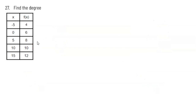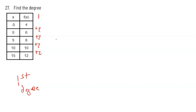Let's look at another example, but first we check for equal interval inputs: negative 5 to 0 is plus 5, 0 to 5 is plus 5, 5 to 10 is plus 5, and so on. Now our first set of differences is plus 2, then plus 2, plus 2, plus 2, plus 2 — it only took one time looking at the differences to see a constant. So this is a first degree polynomial, which makes sense because first degree polynomials are linear functions, and linear functions have a constant rate of change. You just look at those successive differences, and once they're constant, count how many times you had to look — that is your degree.